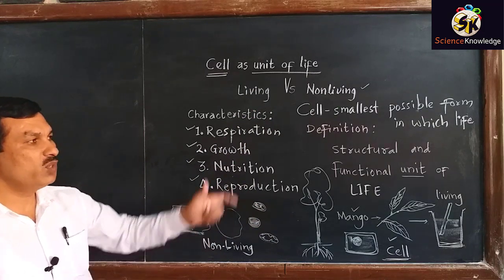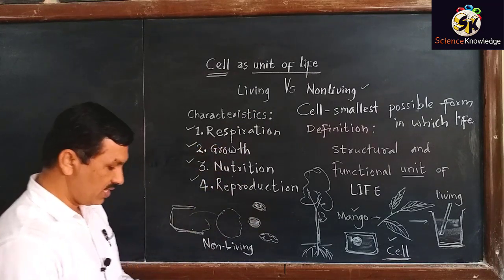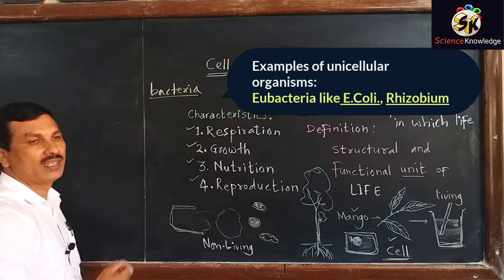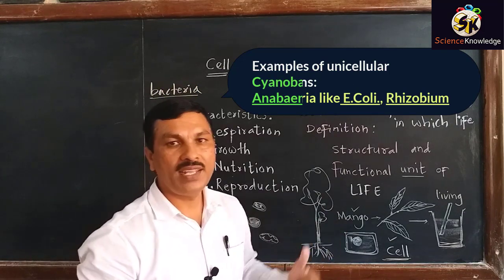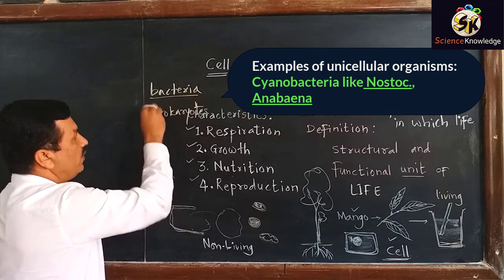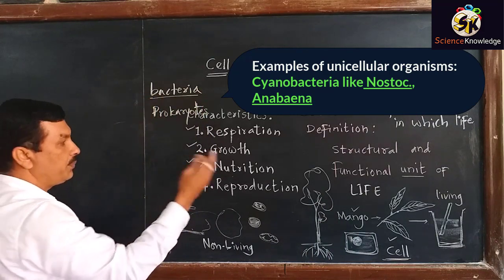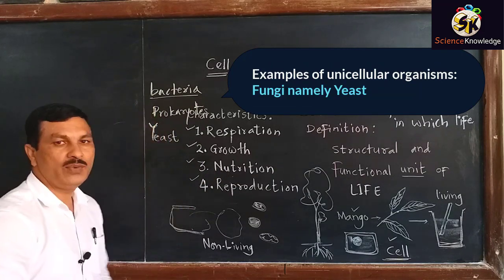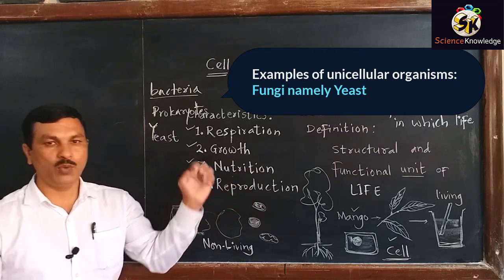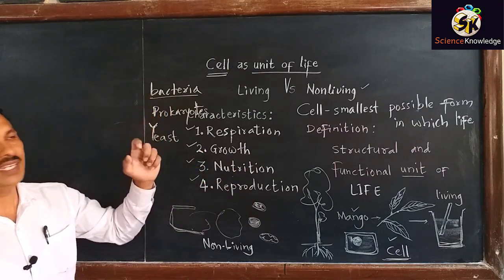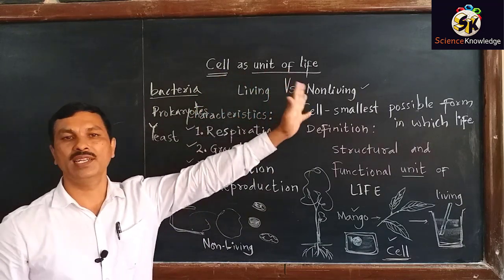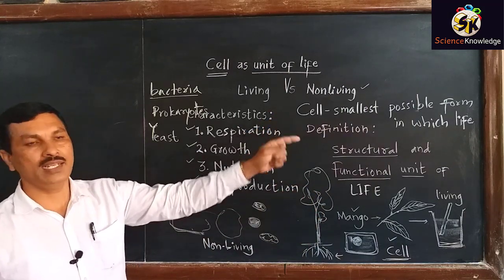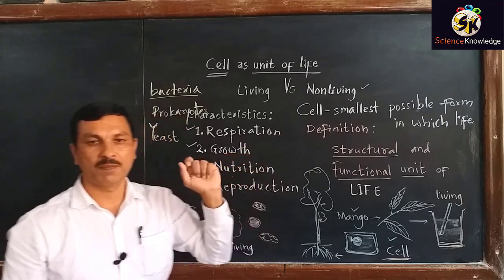We are familiar with a number of such examples. We have seen bacteria — they are unicellular structures and still they are living. We have cyanobacteria, which are prokaryotic organisms. We can also have examples of unicellular fungi like yeast. So they are surviving even though their body is made up of a single cell. That is why the cell is called as a unit of life. The entire body structurally is made up by cells, and therefore the cell is called as a structural unit.